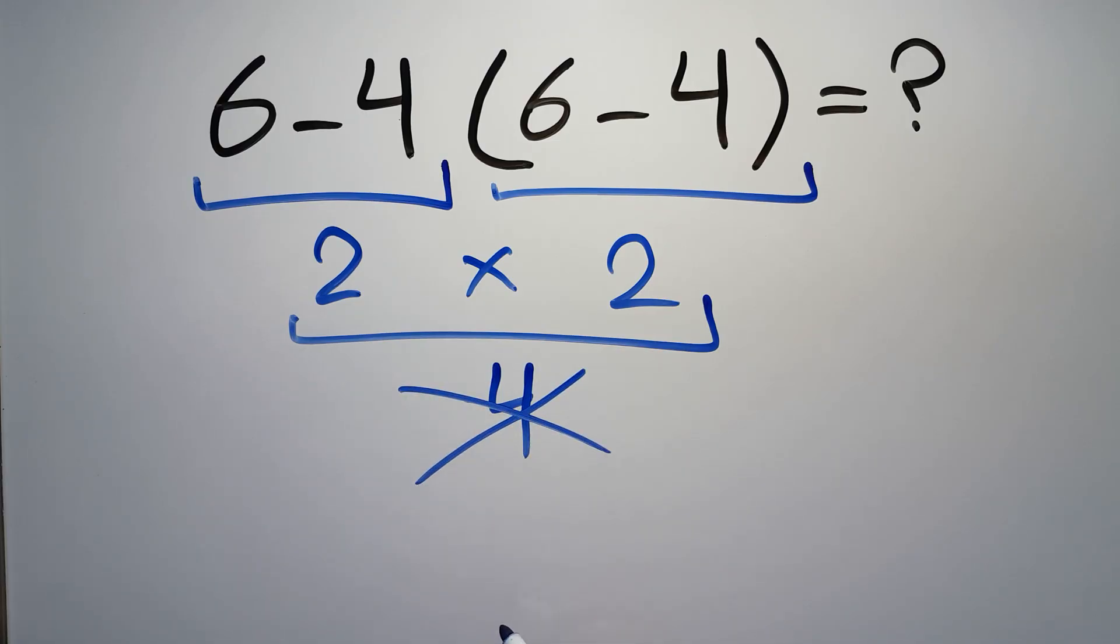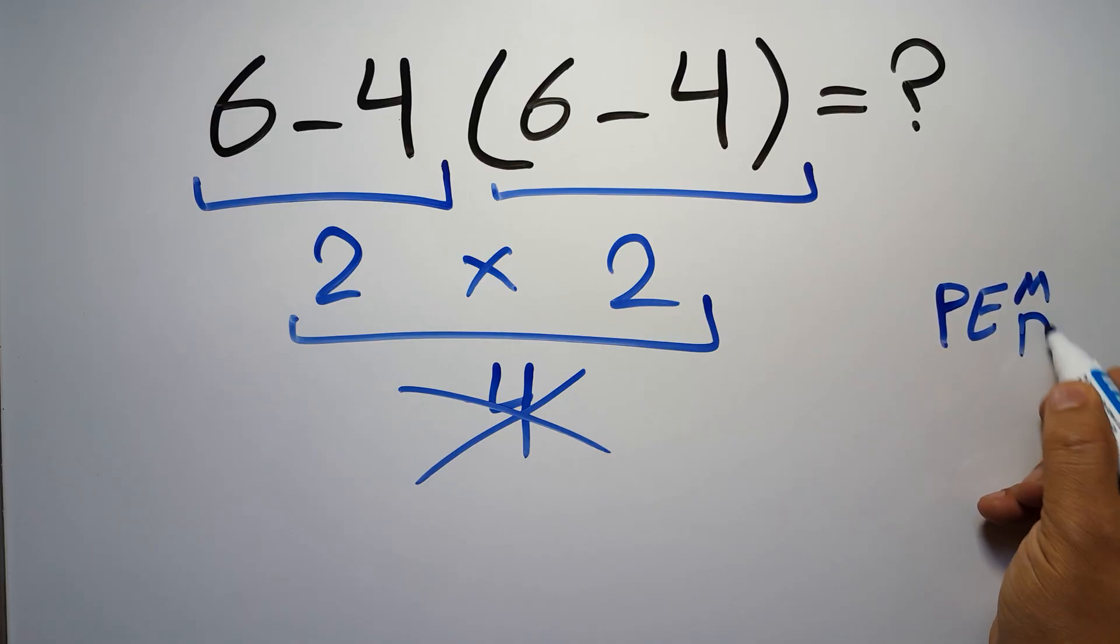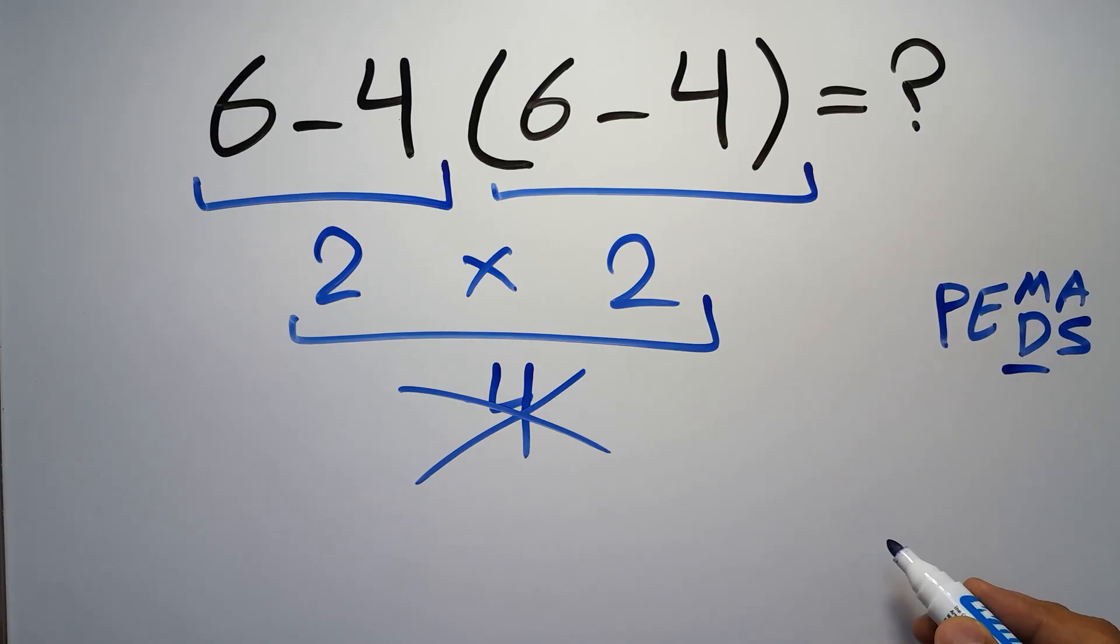Because according to the order of operations, first we have to do parentheses, then exponents, then multiplication or division, and finally addition or subtraction. Remember that multiplication and division have equal priority, and we have to work from left to right. And the same applies to addition and subtraction.